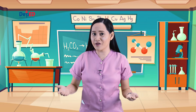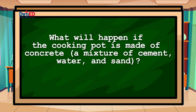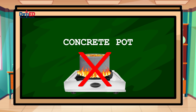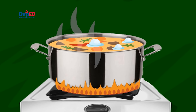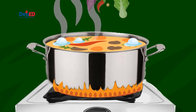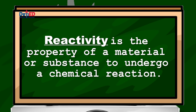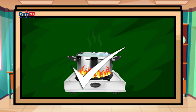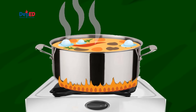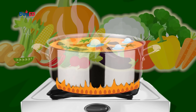For question number three: What will happen if the cooking pot is made of concrete, a mixture of cement, water, and sand? The answer is it will take a longer time to cook the food because heat cannot easily pass through it. Concrete is not as good a thermal conductor as metals. Another important consideration is that the material of the cooking pot must not react with the ingredients. The property that refers to a material's ability to undergo chemical reaction with other materials is known as reactivity. Most metals are non-reactive, so they will not undergo chemical reactions with food ingredients, making them safe for cooking pots.